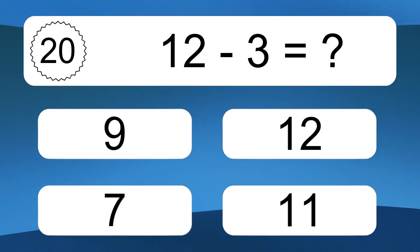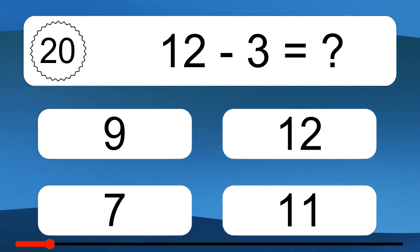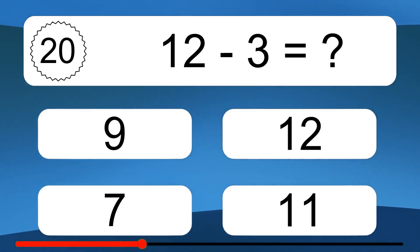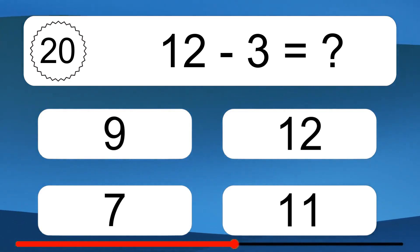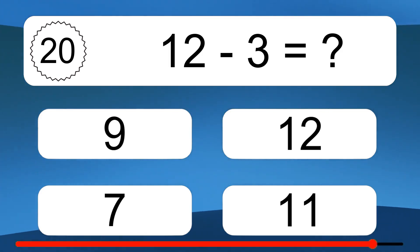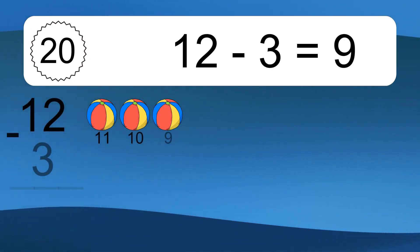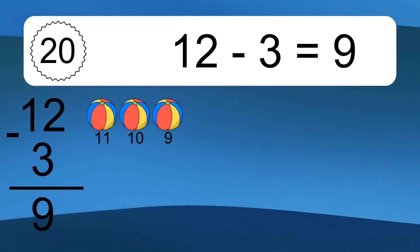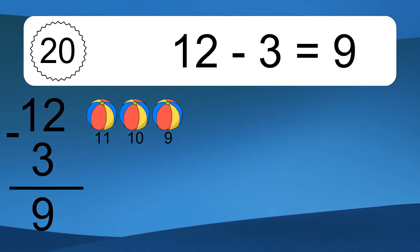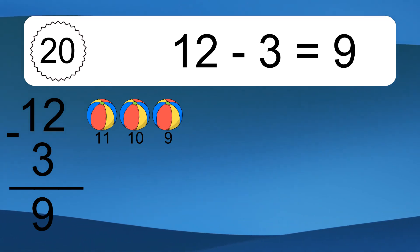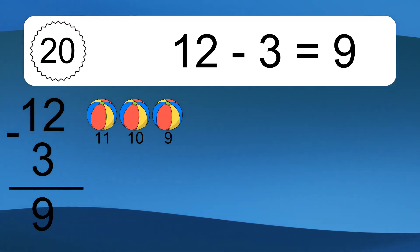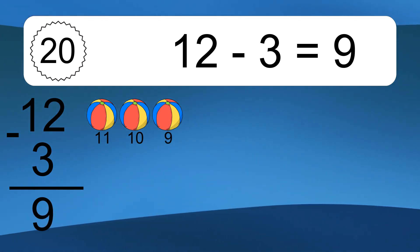15 minus 5 equals 10. Let's count it: 14, 13, 12, 11, 10. 12 minus 3 equals what? 12 minus 3 equals 9. Let's count it: 11, 10, 9.